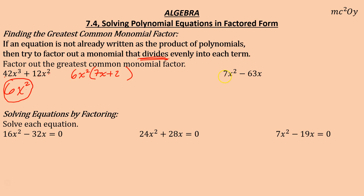For 7x² − 63x: what goes into 7 and 63? That's 7. What goes into x² and x? The smaller degree, so x. Greatest common factor is 7x. Factoring out: 7x(x − 9). Check: 7x × x = 7x², and 7x × 9 = 63x. For the previous example, checking: 6 × 7 = 42, x² × x = x³; 6 × 2 = 12, x² × 1 = x².